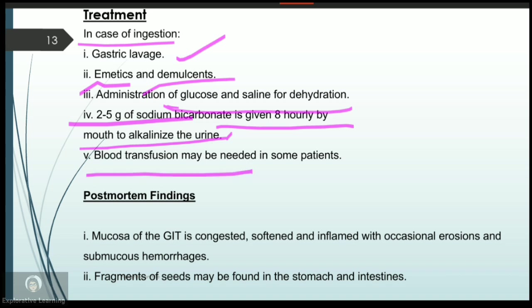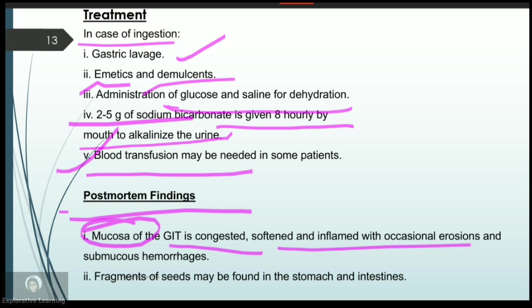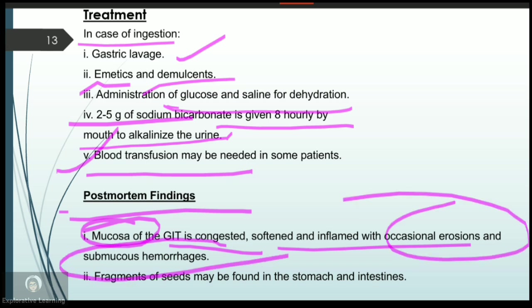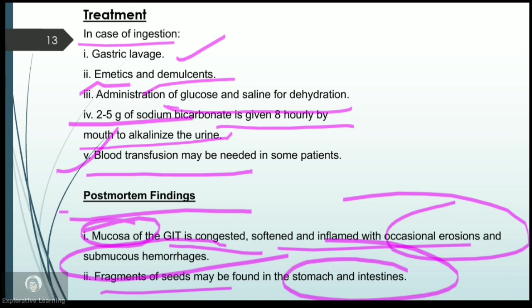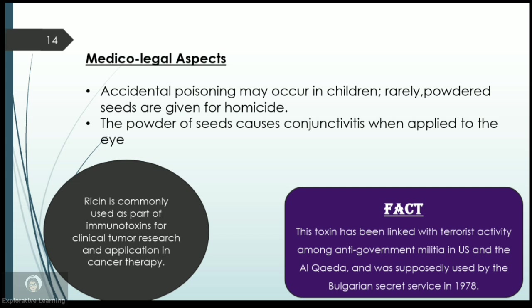Post-mortem findings often show a congested gastrointestinal tract. The mucosa present in the GIT is often congested, with softening, inflammation, occasional erosions, and hemorrhages visible at the submucosal level. Fragments or residues of the seeds can also be found in the gastrointestinal tract of the patient.